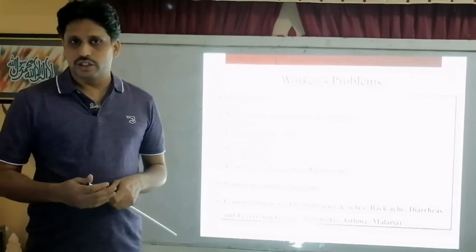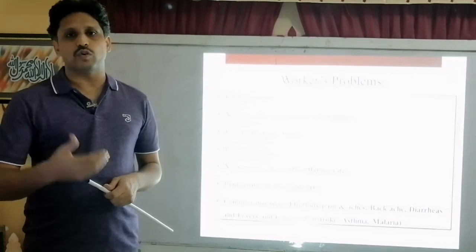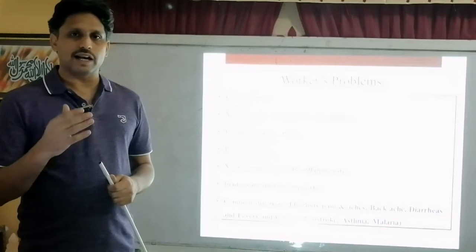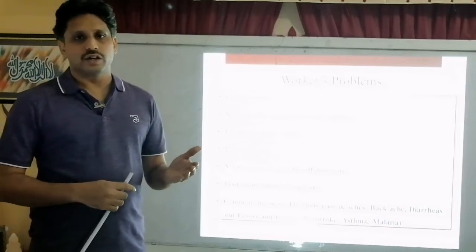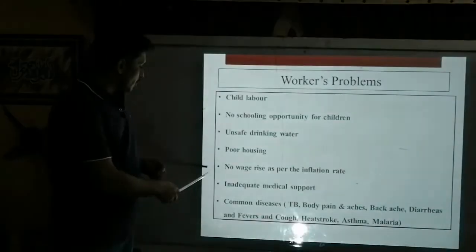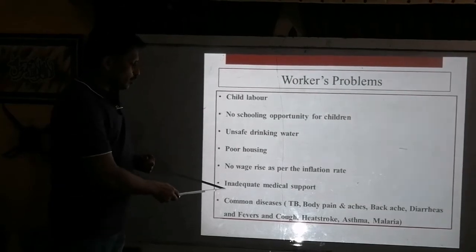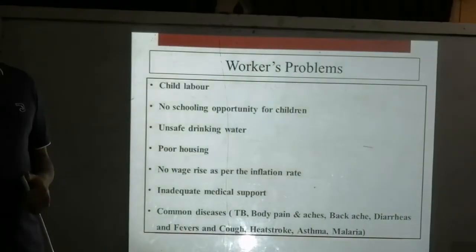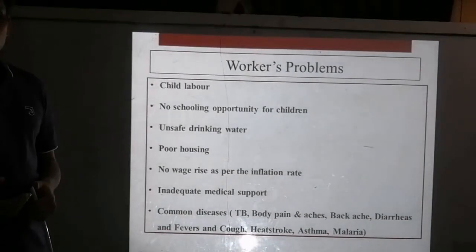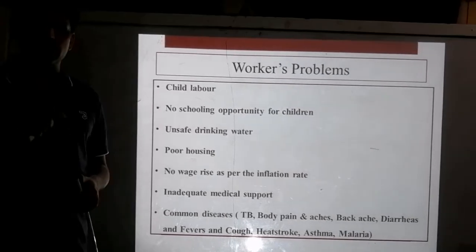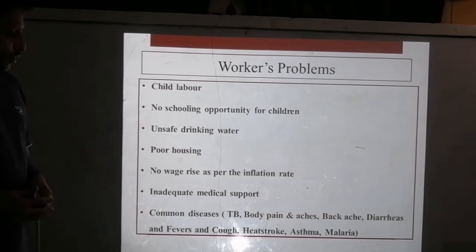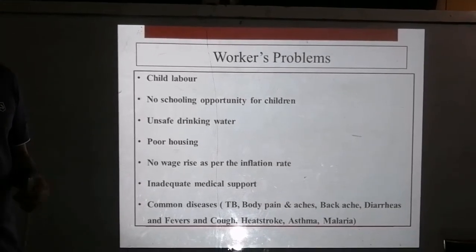With debt bondage, owners encourage workers to take loans, and when workers are unable to pay back, they are bound to stay and work at the same kiln regardless of wages. Other problems include no wage rise in line with the inflation rate and inadequate medical support — workers may be given only 200 rupees for an injury, which is then deducted from their wages. Common diseases among workers include TB, body pain, back pain, diarrhoea, fever, cough, heat stroke, asthma, and malaria.